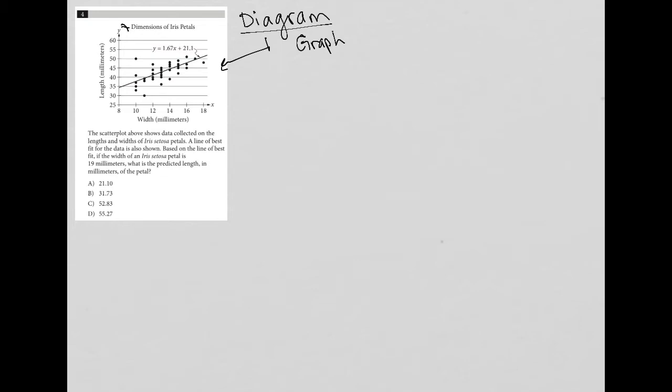So I have no idea what that means as of right now. But then I go on to the x-axis, which says width in millimeters, and the y-axis, which says length in millimeters. So the last thing I'll do is take a look at this equation. So obviously we have an equation of this line, which looks like a line of best fit right there.